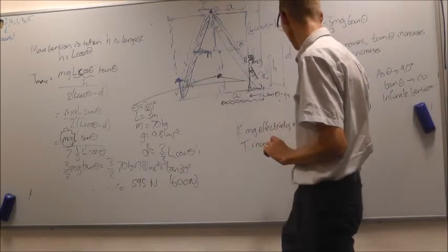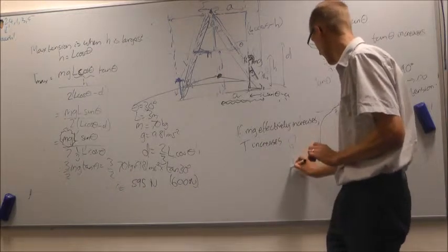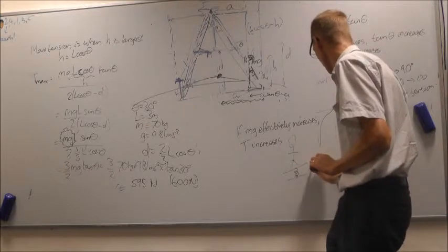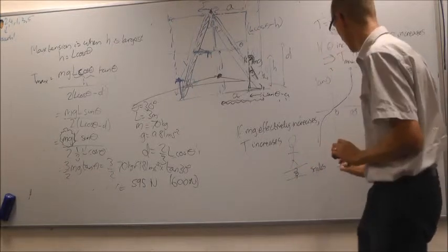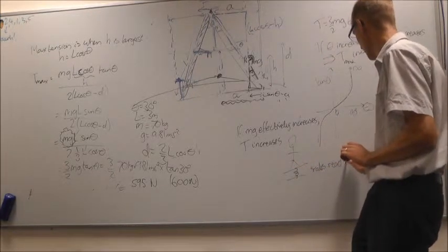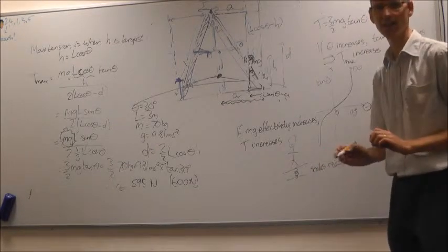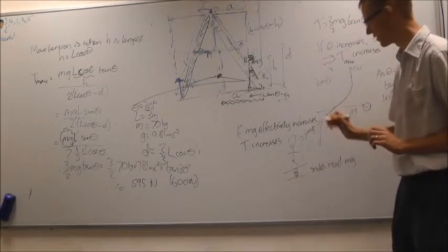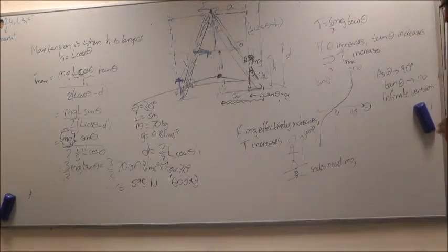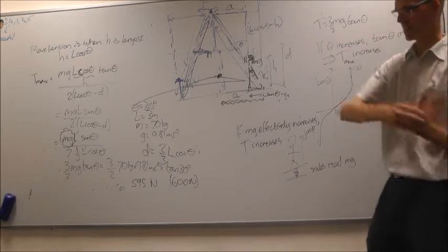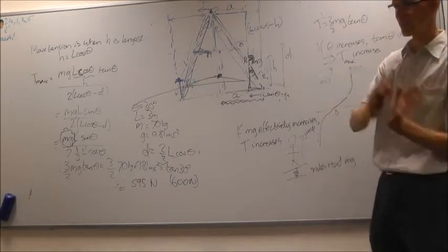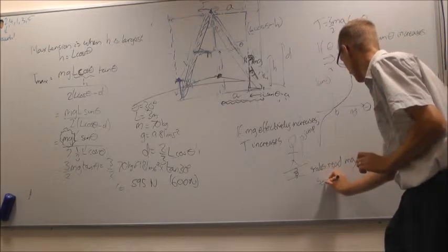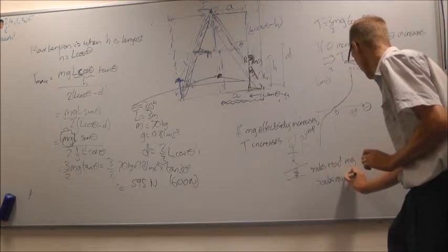So this is kind of like, you're standing on your scales, bathroom scales, just a spring balance. And they might read Mg if you're standing there, but if you try to jump in the air, they're going to increase and then decrease again. Scales read more than Mg.